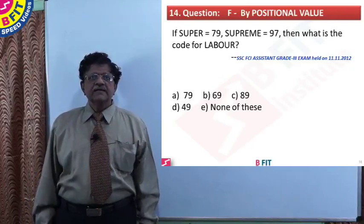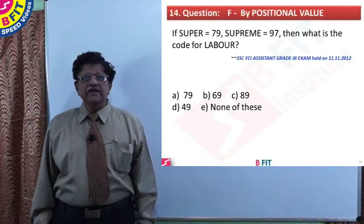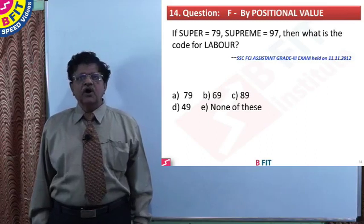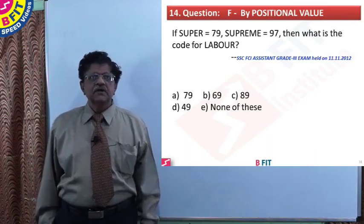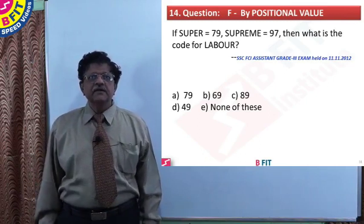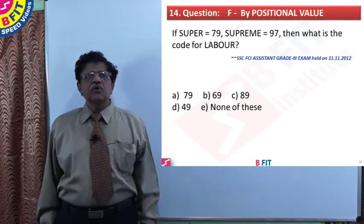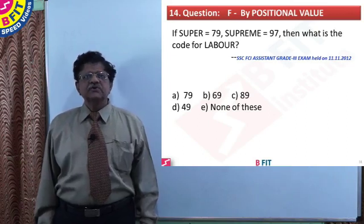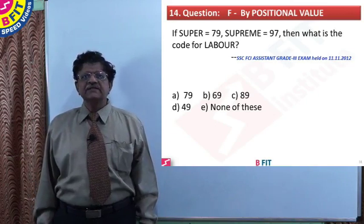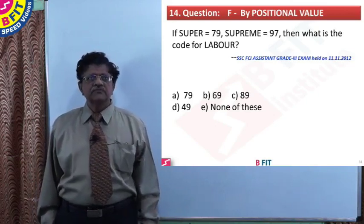Let us look at question number 14, which is based on the positional value of the alphabets. If SUPER is 79 and SUPREME is 97, then what is the code for LABOR? This question is taken from SSC FCI Assistant Grade 3 exam held in 2012.